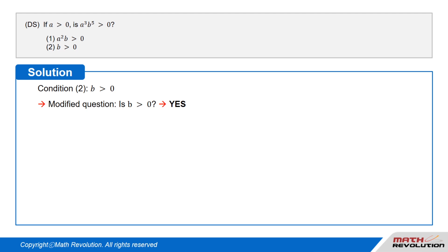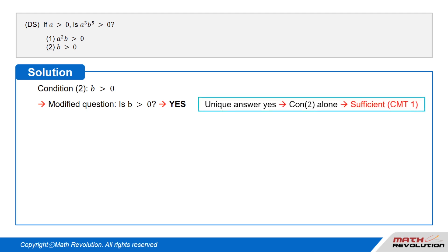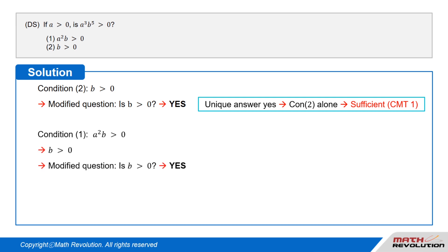Let us take a look at condition two. It tells us that b is greater than zero. We had modified our question to: is b greater than zero? The answer is a unique yes, so the condition is sufficient. According to CMT1, which states that the answer will be in terms of a unique yes or no, condition two alone is sufficient.